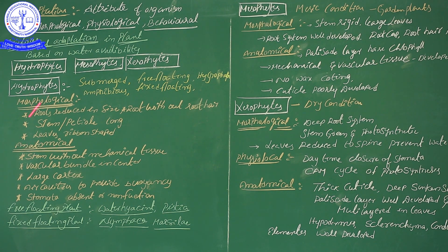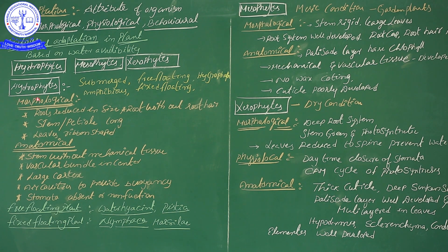Now, anatomical adaptations of hydrophytes. The stem is without mechanical tissue. Mechanical tissue gives strength and stiffness to the plant. But water-body plants do not need mechanical tissue because the body needs to be flexible to move. Therefore the stem lacks mechanical tissue. The vascular bundles — xylem and phloem — are positioned at the center of the stem.